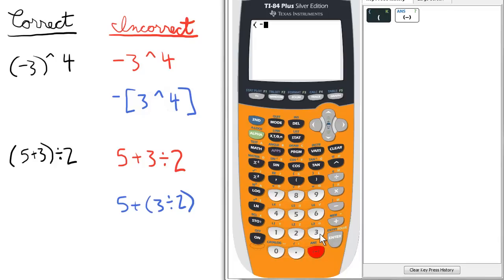Open parentheses, negative 3, close parentheses, raised to the fourth. Because negative 3, the quantity raised to the fourth, is 81.